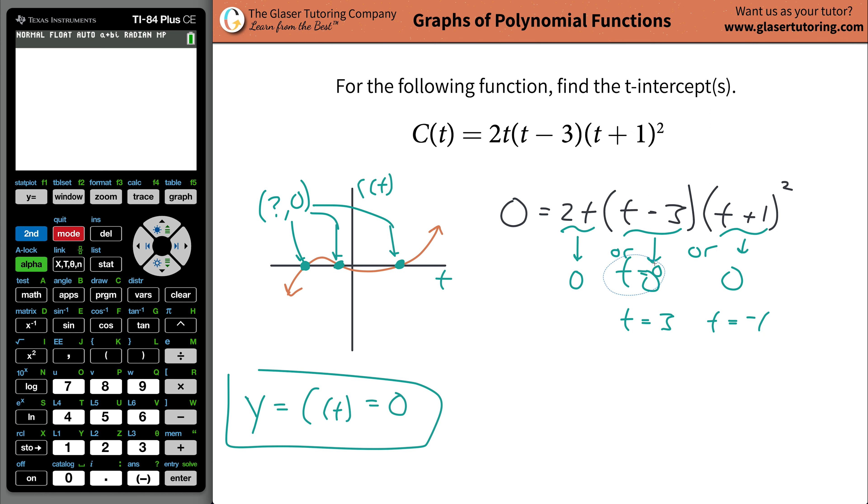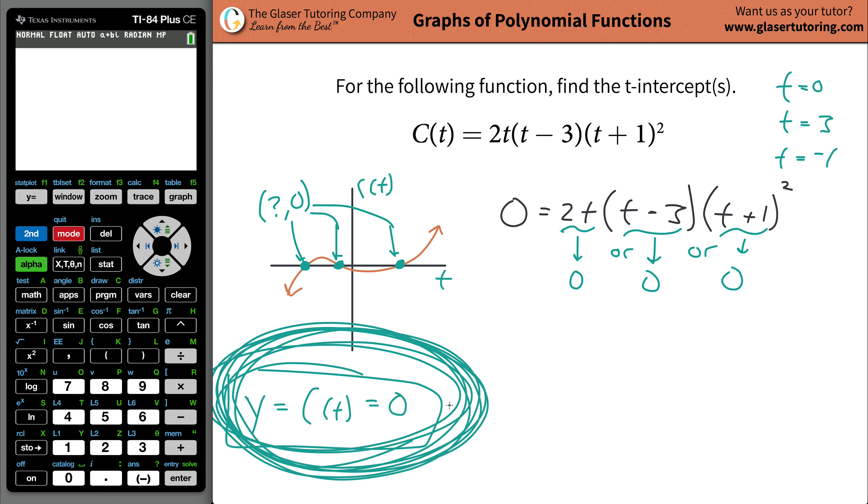You found the T values, or aka the X values, that will make that function become zero. And that's what we defined the T intercepts to be, right? The values of T that will make the function or the Y value go to zero. You're getting very sleepy. No, hopefully not. Not while you're watching this video. Hopefully I'm getting you amped up to do more practice problems.